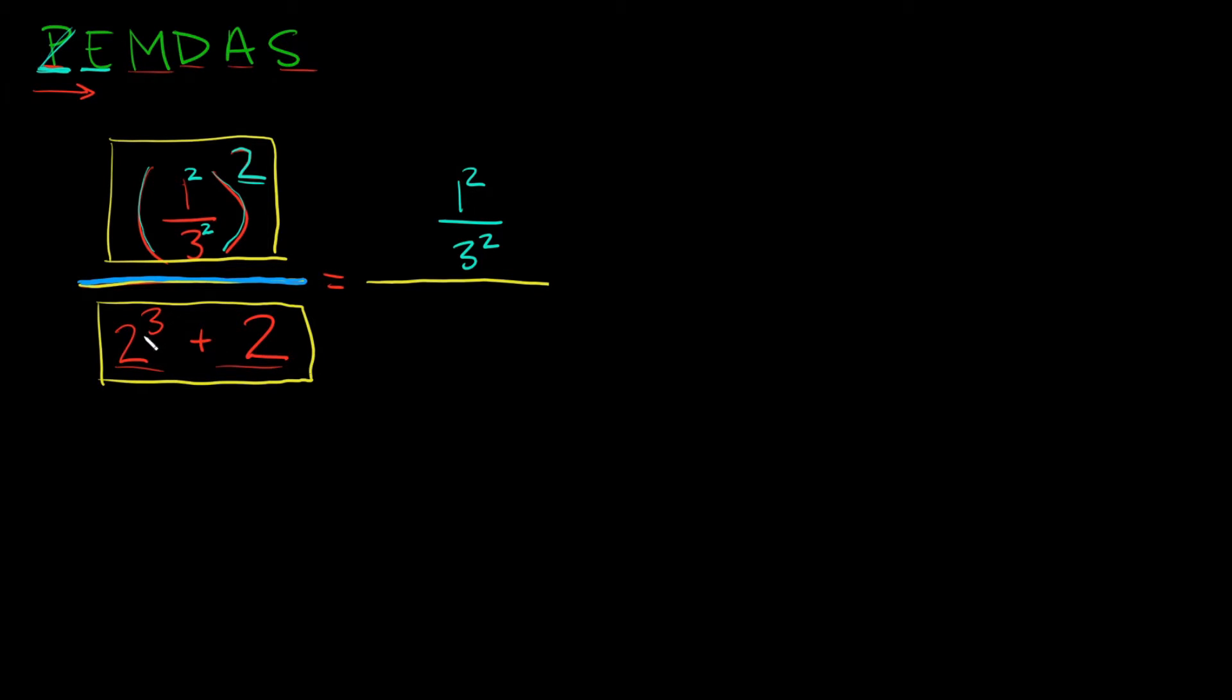Exponents. Do we have any exponents down here? Yes we do. We have this three right here. What is two cubed? Well that's the same thing as two times two times two, which is equal to eight. So we simplified the exponent. So let's bring the rest of our problem over, this plus two part.